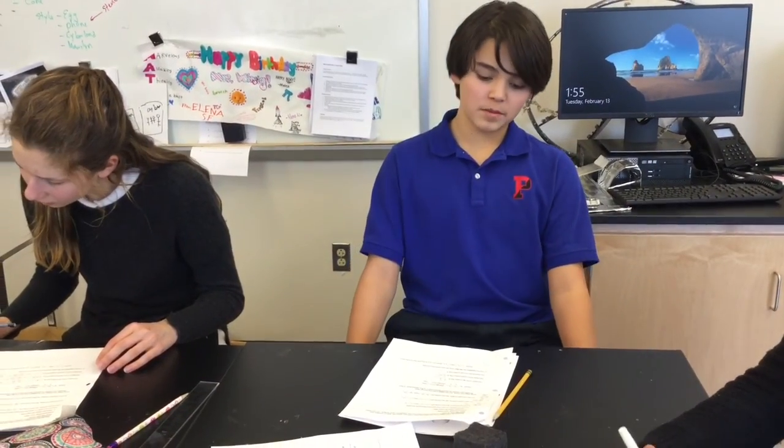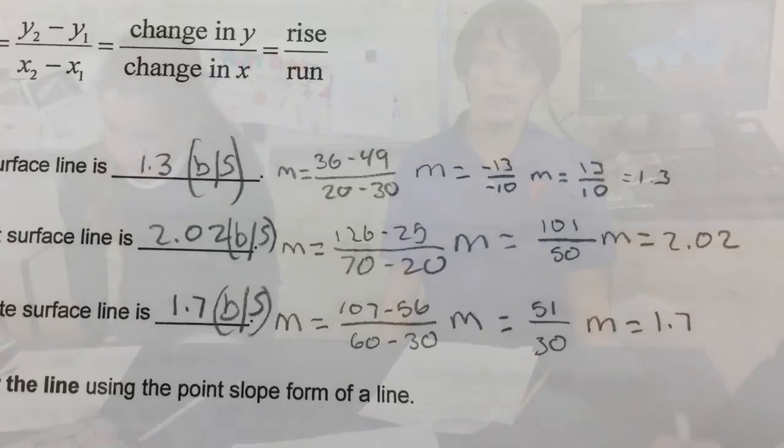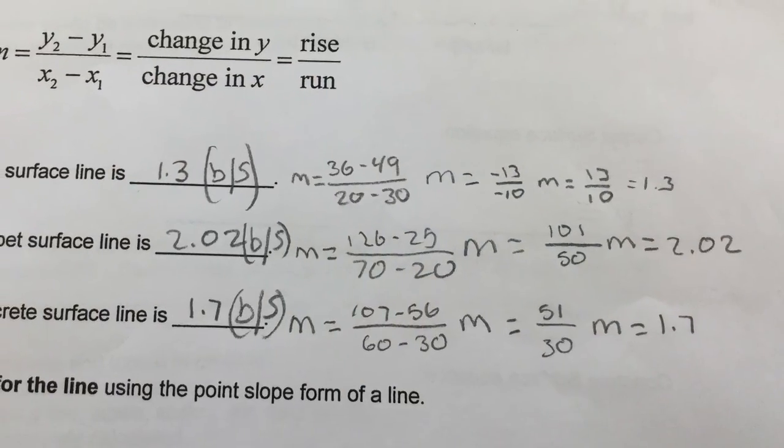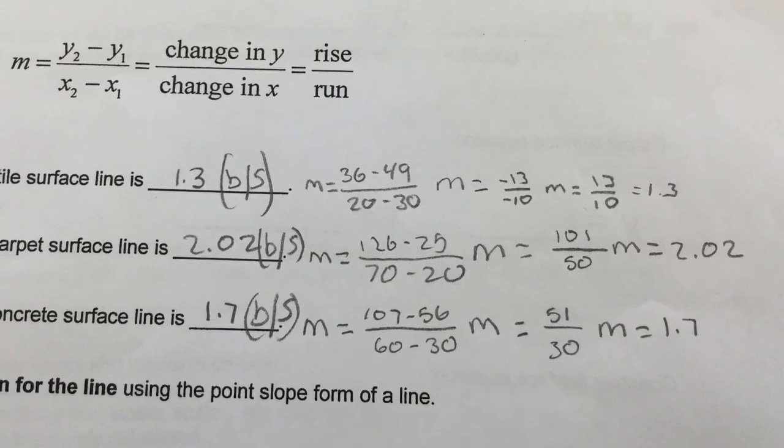We found that the slope of the tile surface is one point three, and that means that we had one point three bounces per second. The concrete surface is one point seven, which means that it's one point seven bounces per second.